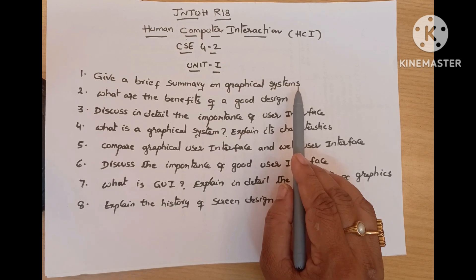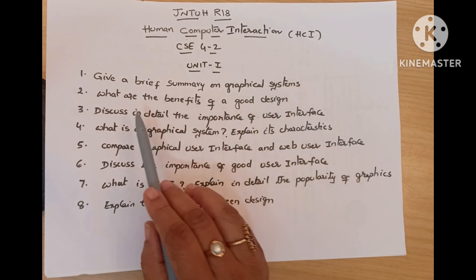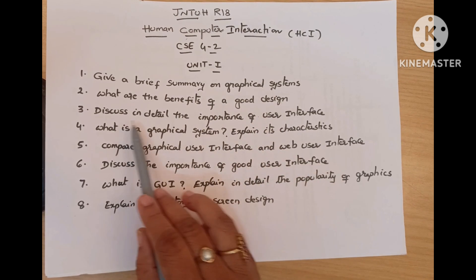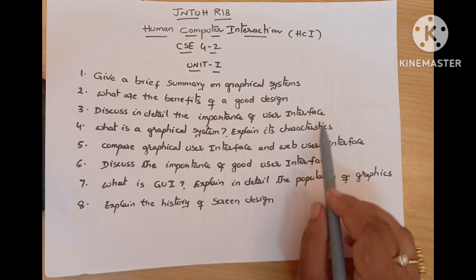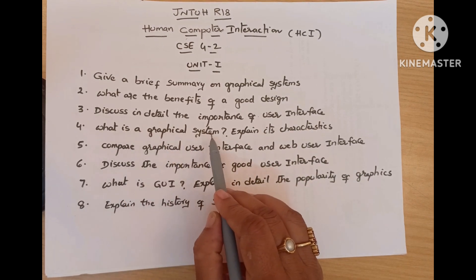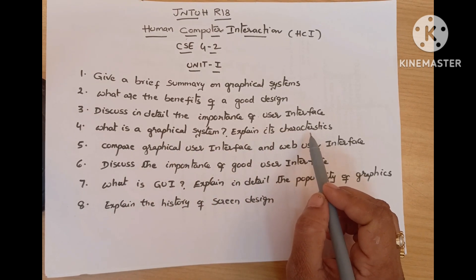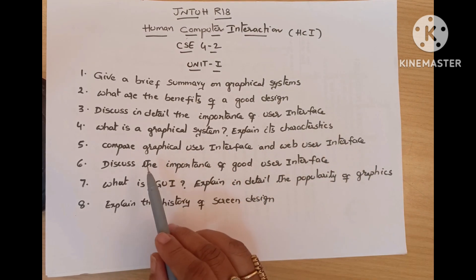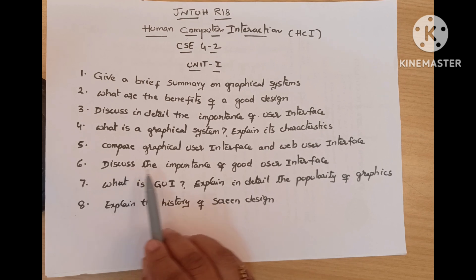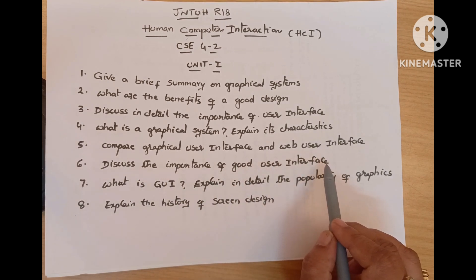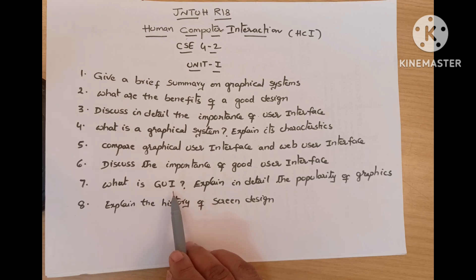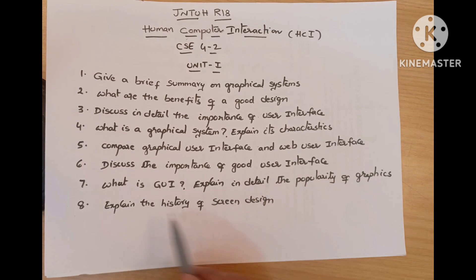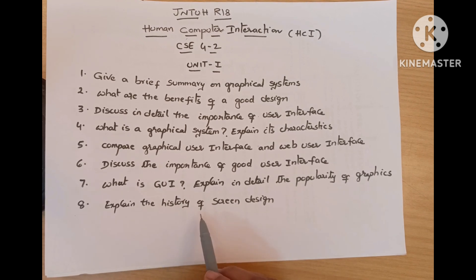The first question is: give a brief summary on graphical systems. Second question: what are the benefits of a good design? Third: discuss in detail the importance of user interface. What is a graphical system? Explain its characteristics. Next, compare graphical user interface and web user interface. Discuss the importance of good user interface. What is GUI? Explain in detail the popularity of graphics.